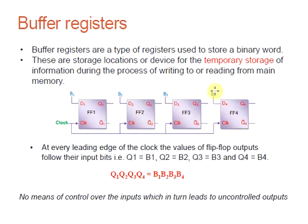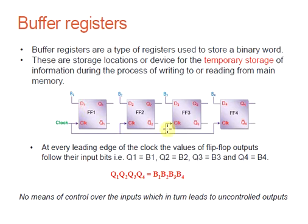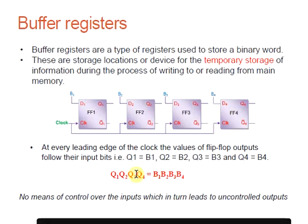B1, B2, B3, and B4 are the inputs where binary data information is applied, and Q1, Q2, Q3, and Q4 are the output terminals. When all the flip-flops are synchronized with a clock pulse, the data inputs are loaded into the flip-flops simultaneously. Whatever data given to B1, B2, B3, B4 will be reflected in Q1, Q2, Q3, Q4. So the relation between outputs and inputs is: Q1 Q2 Q3 Q4 = B1 B2 B3 B4.